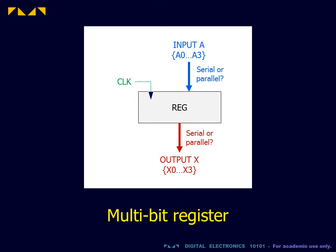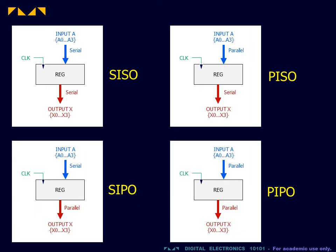Multi-bit registers are classified according to the transmission formats of the inputs and outputs. There are therefore four classes of register: serial in serial out, serial in parallel out, parallel in serial out, and parallel in parallel out.